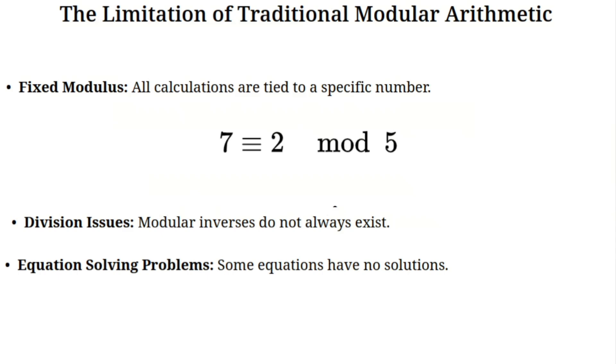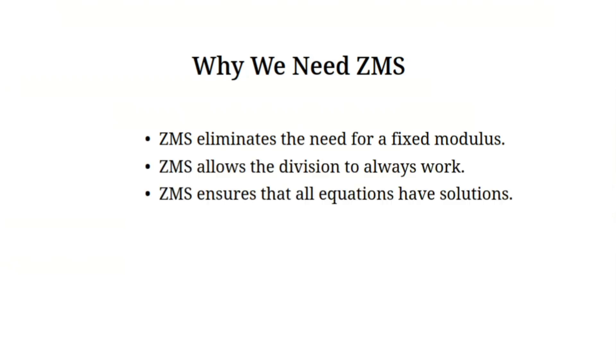Three, solving equations can be impossible. Since division is not always allowed, simple equations can have no solution in modular arithmetic. And this is why we created ZMS, zero modular system. It removes the need for a fixed modulus and lets us solve any equation without worrying about modular inverses. Let me show you how it works.